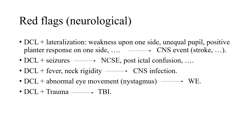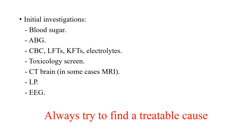When you face a patient with disturbed conscious level, fever, and neck rigidity, a CNS infection could be suspected. When there are abnormal eye movements, Wernicke's encephalopathy should be suspected — especially if the patient has a history of chronic alcoholism, malnutrition, or any other cause of thiamine deficiency. When you face a patient with trauma and disturbed conscious level, it is usually due to traumatic brain injury and you call the neurosurgeon.